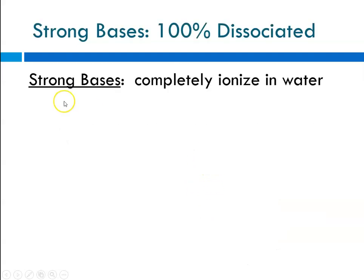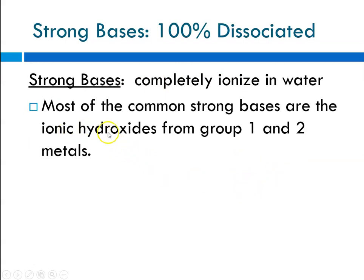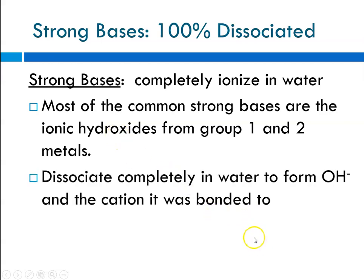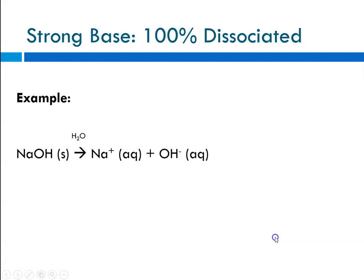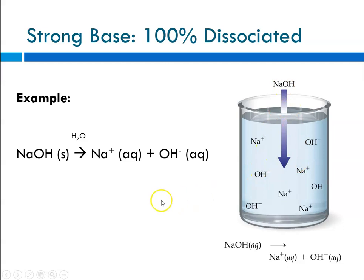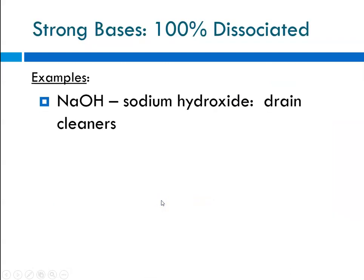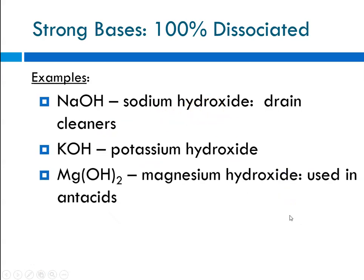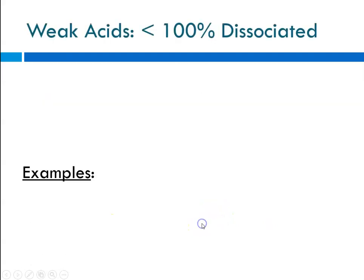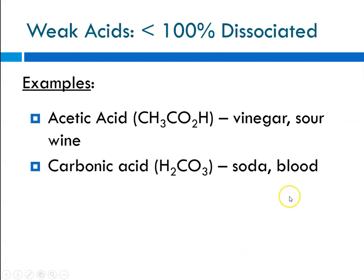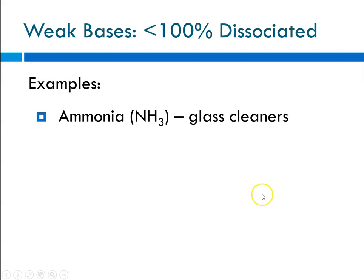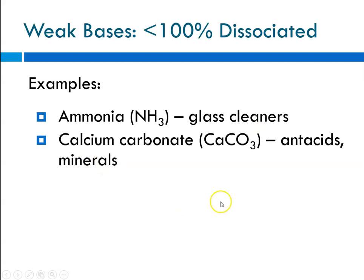Strong bases that are 100% dissociated are mostly the ionic hydroxides of Group 1 and 2 metals — they dissociate completely in water, releasing hydroxide ions and the metal cation. Examples: sodium hydroxide (found in drain cleaners), potassium hydroxide, and magnesium hydroxide (used in antacids). Weak acids, which are less than 100% dissociated, include acetic acid (vinegar), carbonic acid (found in soda and blood), and citric acid (fruit juice). Weak base examples include ammonia (Windex glass cleaner), calcium carbonate (antacids), and calcium hypochlorite (used to chlorinate swimming pools and hot tubs).